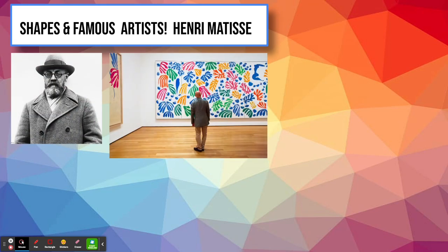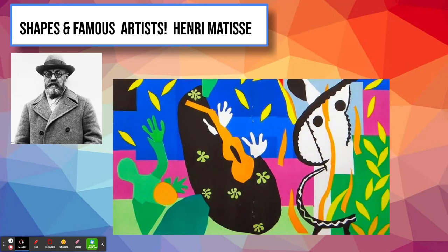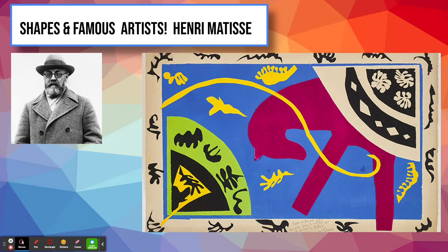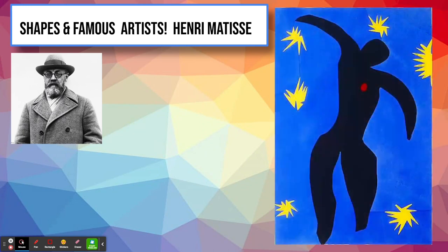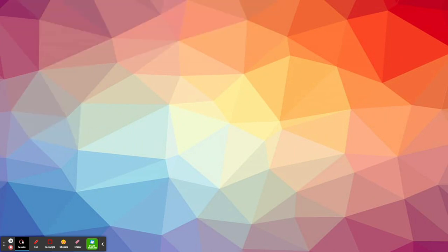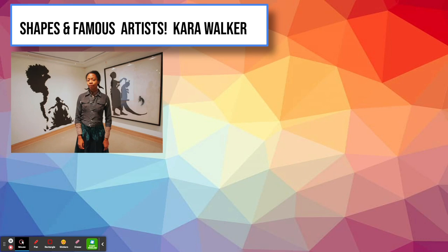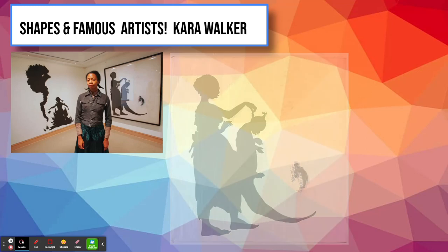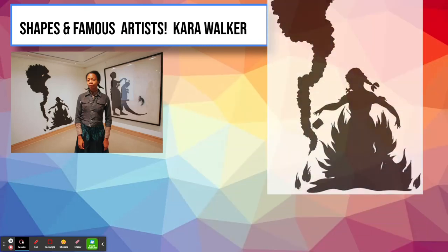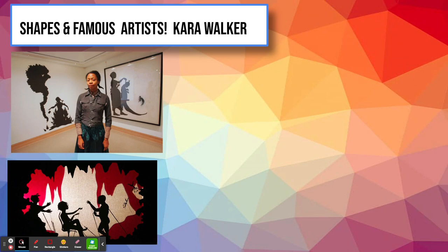Henri Matisse, a French artist, was very well known for making beautiful paintings using geometric and organic shapes. Some of the dynamic shapes really helped to show the motion of the piece. And finally, a current artist who is also a professor — Kara Walker — is most famous for her paper cut-out silhouette shapes. These are actually drawn and cut out of paper. Most of them are very realistic and dynamic: realistic meaning we can see and recognize the shapes, dynamic meaning that they are in motion.